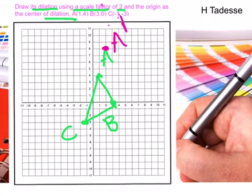For B, it's (6,0) because you have to multiply by 2. So I'm going to label that B prime.